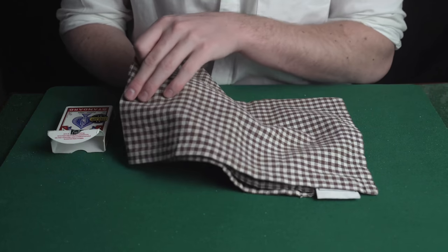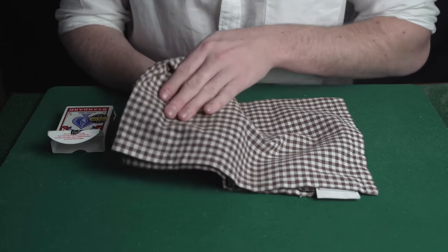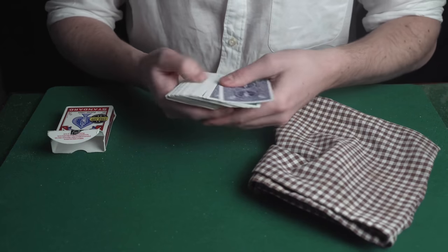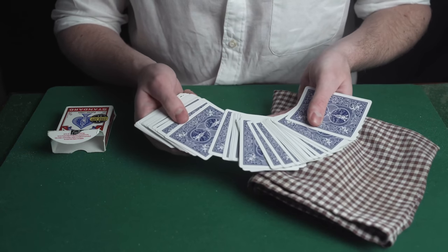So what you do is you take the cards, put them underneath the cloth, flip them, rub and then when you show the cards again all of them are blue.